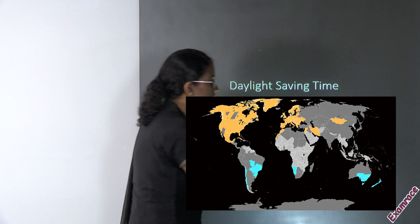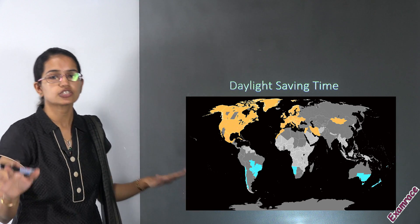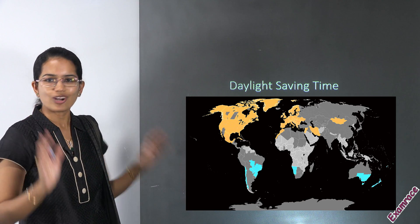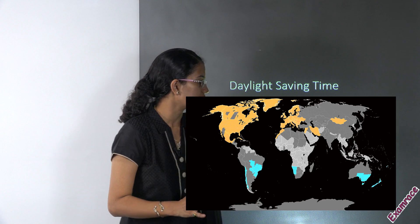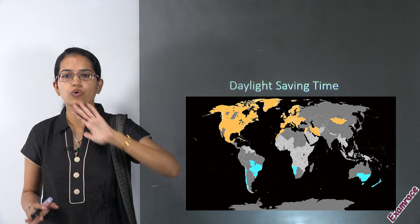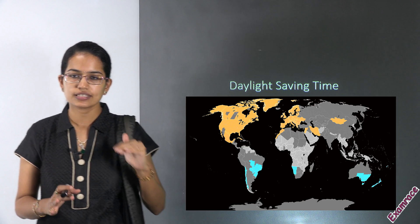The countries which are white are the countries which have never witnessed or thought about the concept of daylight saving. The other countries were previously part of it but now no more consider daylight saving as an important aspect.